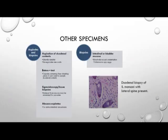Other specimen types include aspirates and biopsies. Duodenal aspirates could detect the presence of Giardia lamblia or Strongyloides stercoralis. The enterotest includes a capsule containing a free-wheeling piece of yarn which samples duodenal contents. Also available is the sigmoidoscopy tissue biopsy as well as abscess aspirates. Other biopsies include intestinal or bladder mucosa, which allow for direct microscopic examination of Schistosoma species. Here, a duodenal biopsy indicates the presence of Schistosoma mansoni, identified by its lateral spine.